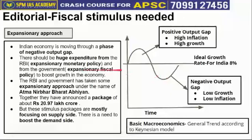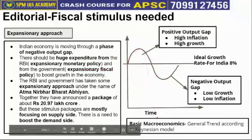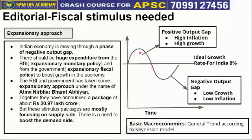When our economy is growing well and is in the boom period, macroeconomic concepts say that the government and the central bank should adopt contractionary policies — that is, withdraw some money from the economy. But when we are in the recessionary phase, decline phase, or negative output gap phase, we should adopt expansionary fiscal and monetary policy. For example, the repo rate should be reduced.